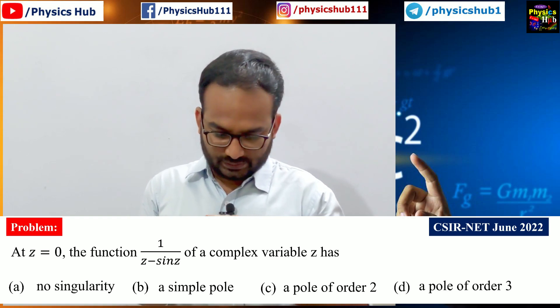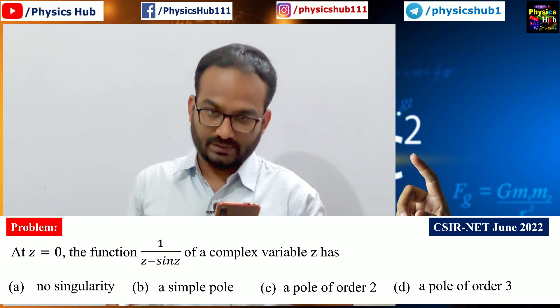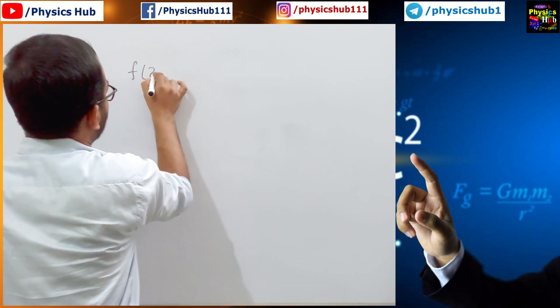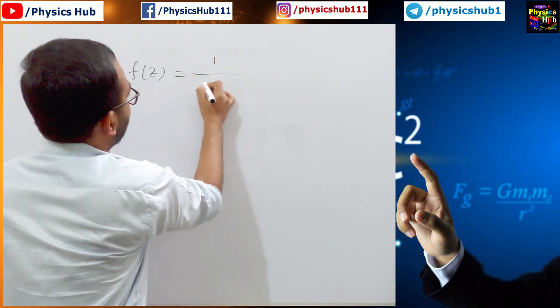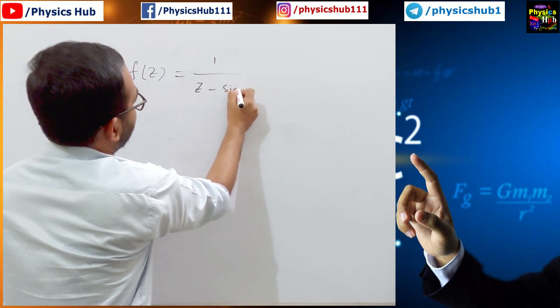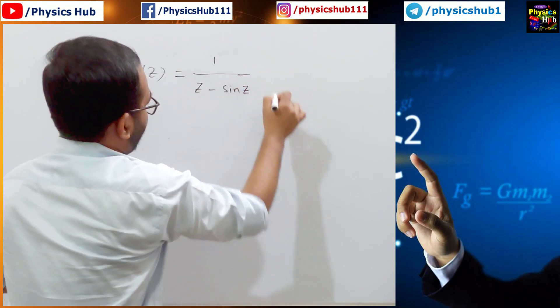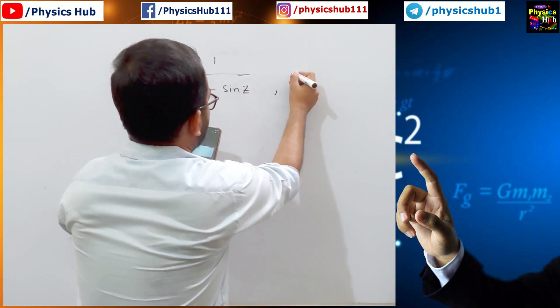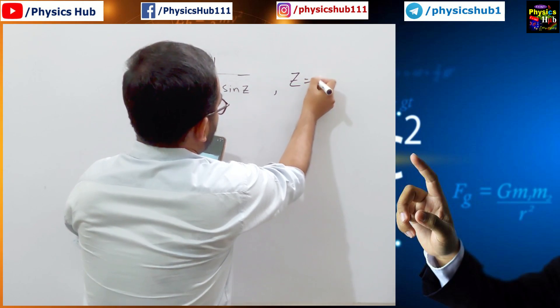At z equals 0, the function 1 by z minus sin z of a complex variable z. So you have been given this function f(z) equals 1 upon z minus sin z. This was given in 3.5 marks. You have to find out the poles or singularity at z equals 0.